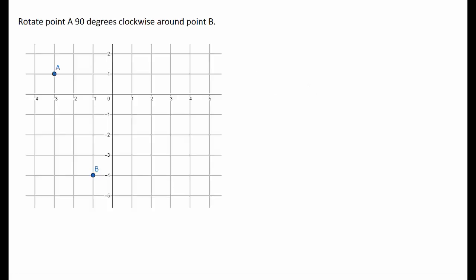In this video we are going to use slope to make 90 degree and 180 degree rotations. Let's start by rotating point A 90 degrees clockwise around point B.